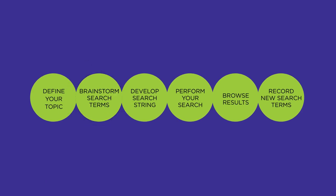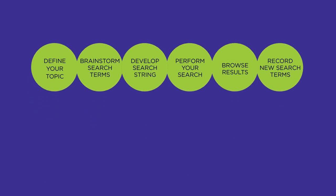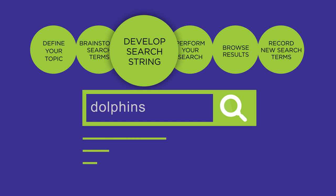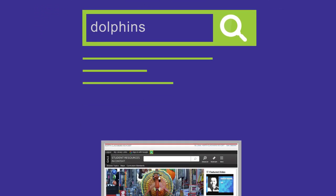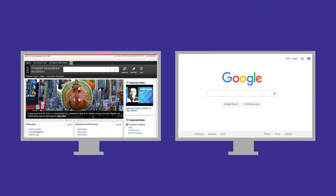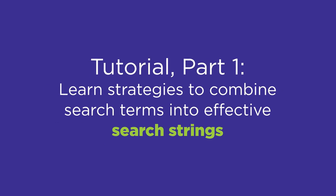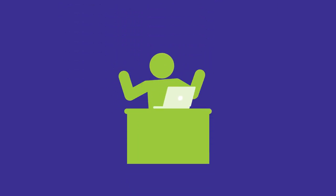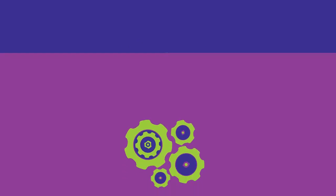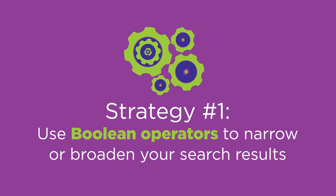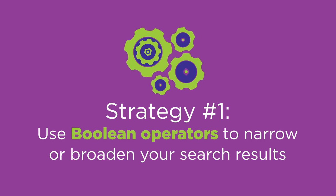After generating search terms for your research topic, you're ready to start searching for information. When searching in a library database or on the internet, you may not initially get the best results. In this two-part tutorial, you'll learn strategies to help you combine search terms into effective search strings. This will put you in control of your results. This video focuses on the first strategy: using Boolean operators to narrow or broaden your search results.